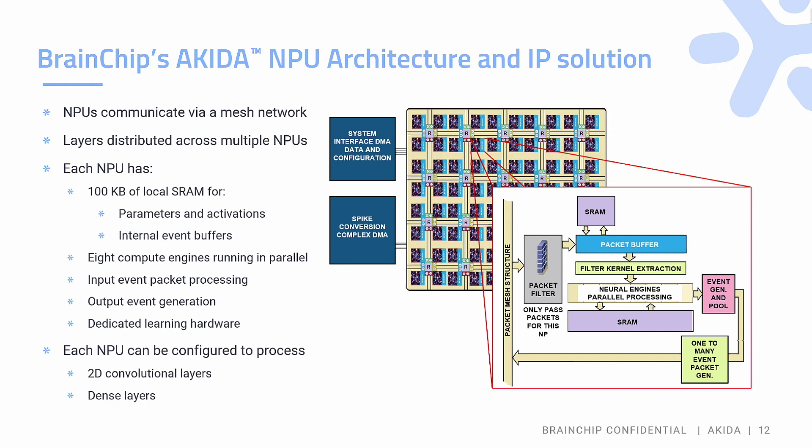The functions done in this device are all the standard functions you need: 2D convolution layers, max pooling, global average pooling, fully connected layers — all of those things you normally see in a CNN can be computed here.